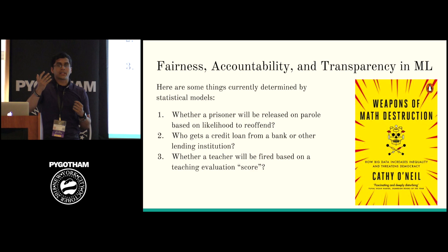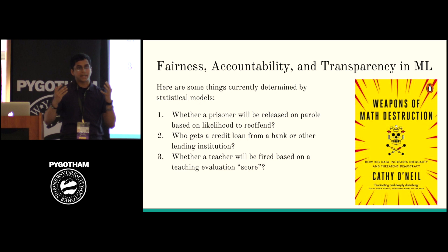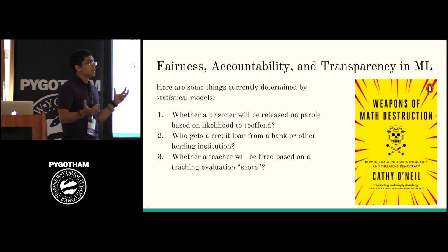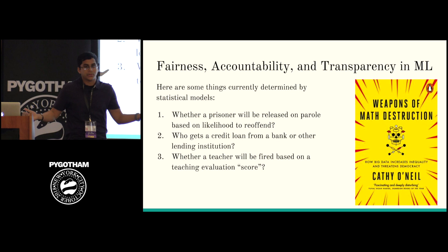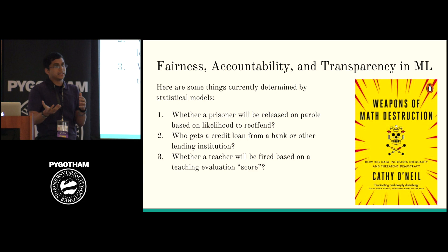This is a huge issue — people's fates are determined by a faceless algorithm acting as an arbiter of their destiny. They don't understand why the algorithm said you're a bad teacher or you don't deserve a credit loan. These types of models perpetuate social inequality: blacks and Hispanics tend to be given longer sentences or are less likely to be given loans from banks. We don't want to be responsible for creating the dystopia.